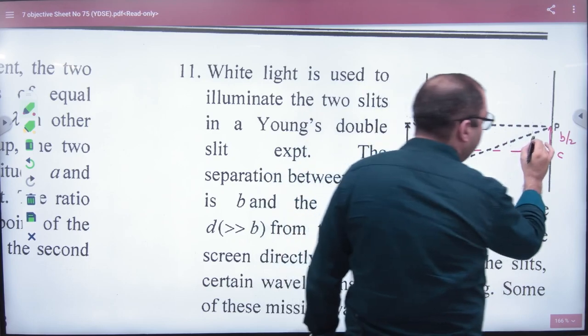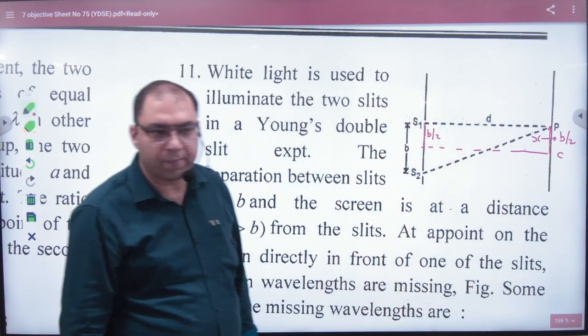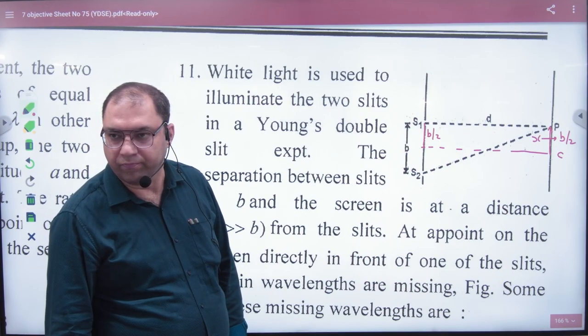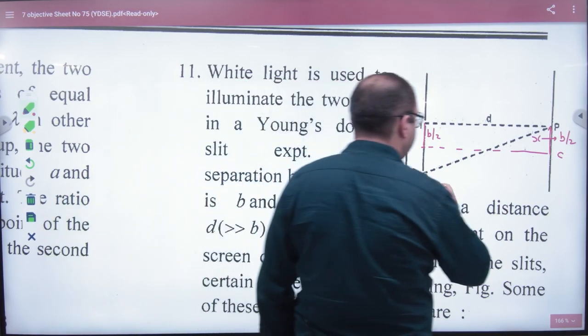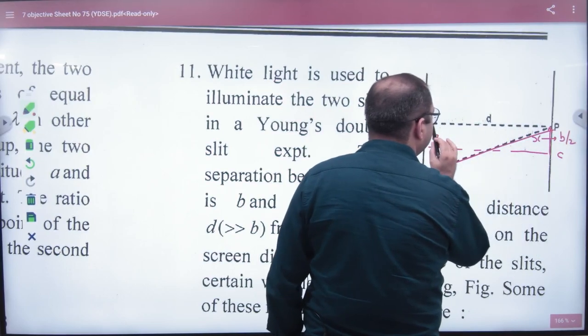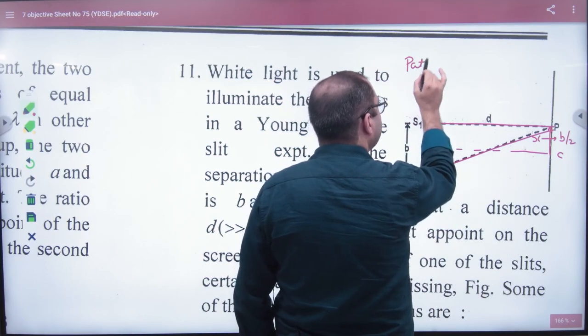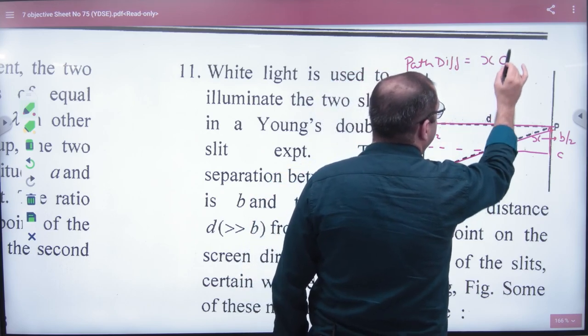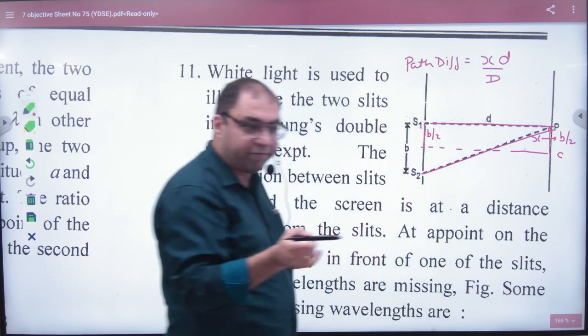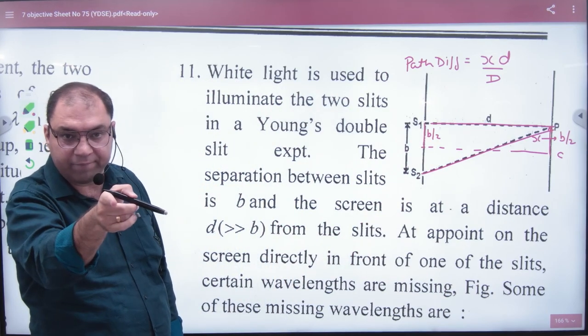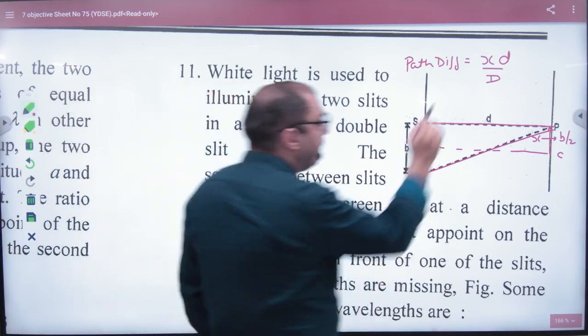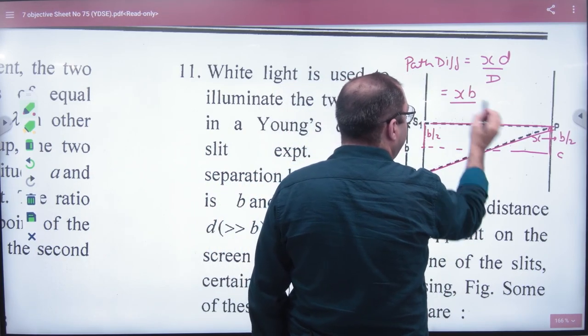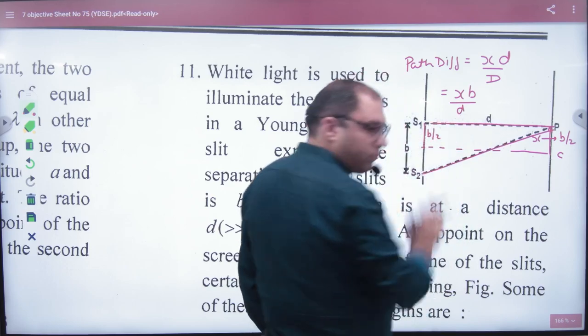And who did we represent it in our theory? By x. So what is the value of x? b/2. To calculate the path difference, we have a special formula in x form. Path difference Δx = xd/D. In this case, we will put b/2 and capital D. What will we put for d? Small d. This is path difference.